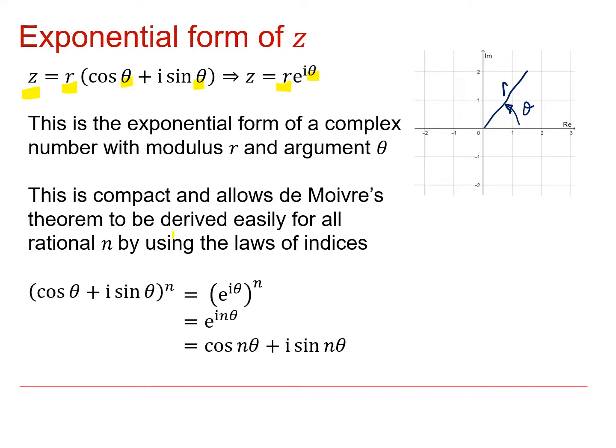This form r e to the i theta is very compact and it allows us to derive de Moivre's theorem for rational n by using the laws of indices as you can see here. So if I've got a complex number cos theta plus i sine theta to the n then that is just e to the i theta to the n which is just e to the i n theta and then turning that back into cos and sine that's going to be cos n theta plus i sine n theta.